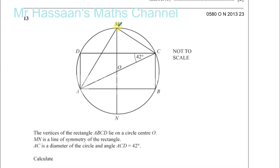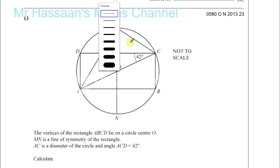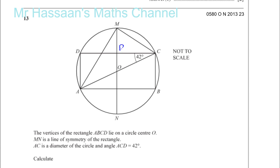MN is a line of symmetry that cuts the circle into two equal halves, so it must pass through the center. MN is also a line of symmetry of the rectangle, which means it cuts the rectangle into two equal halves. So this point here — let's call it P — means DP and DC are the same length, and this angle here must be 90 degrees.